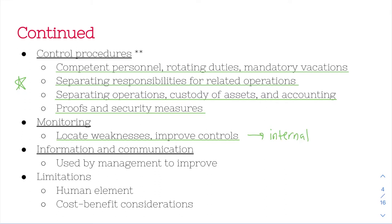There are some limitations to internal control. First, there's the human element — people will make mistakes no matter what, so you have to consider that. There are also cost-benefit considerations. You could be very overbearing as management and watch every employee move to make sure nothing fraudulent happens, but your employees won't appreciate that and it's also costly. So cost-benefit analysis is also a limitation.